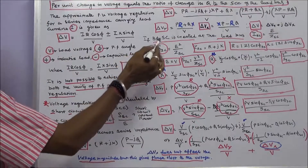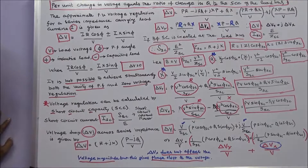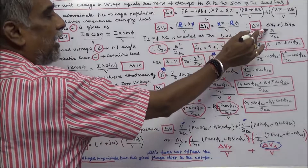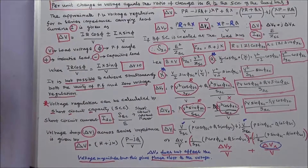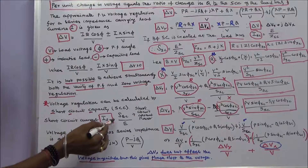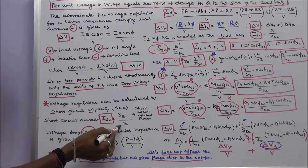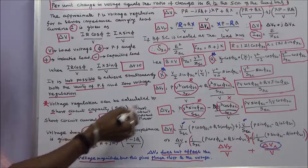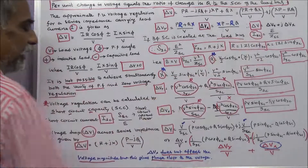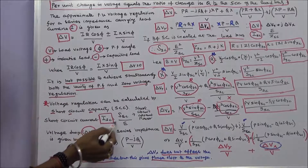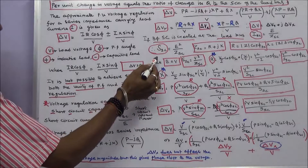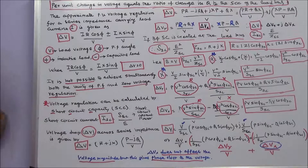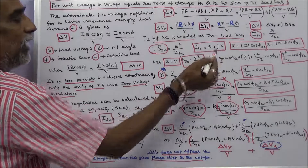If a three-phase short circuit is created at the load bus, the short circuit current ISC equals E divided by the short circuit impedance Z_SC. Also, ISC equals short circuit apparent power divided by E. Substituting, the short circuit apparent power equals E squared divided by Z_SC. The short circuit impedance is equal to R plus jX.